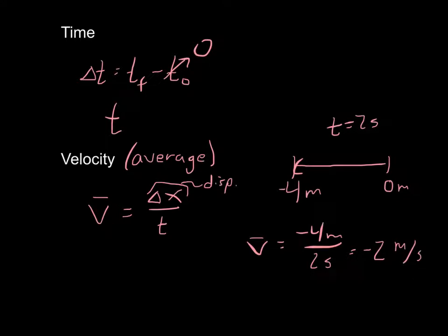Now notice I have a negative here for my velocity - that's just fine. Remember, that's just telling me something about the direction. Are we going in a positive direction or are we going in a negative direction? In this case, you can see I'm going towards more negative values, so I'm headed in the negative direction, so it makes sense that my velocity would be negative here as well.